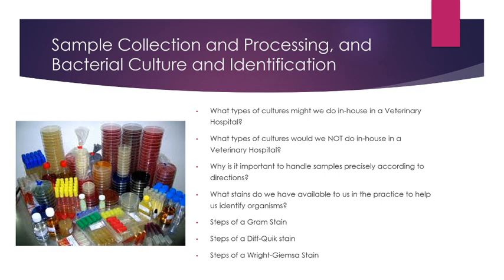Some things to think about: what types of culture might we do in-house at a veterinary hospital? What types do we not do in-house? The types we do in-house are things that are easy to grow but not infectious to people, since we're not set up to have an isolated room to grow things like anthrax or highly contagious pathogens. We could do dermatophytosis or DTM culture, some bacterial or fungal cultures, but not things like MRSA that could be contagious to people.